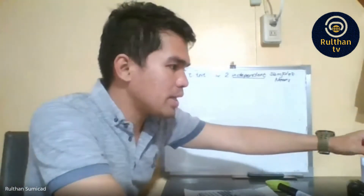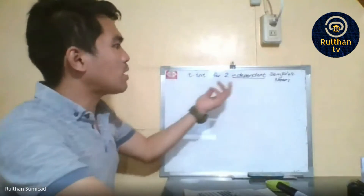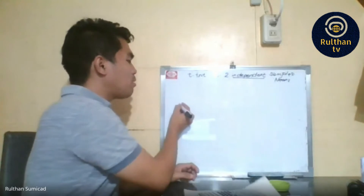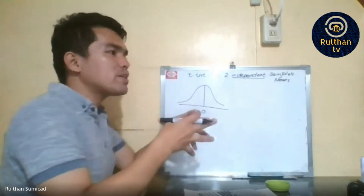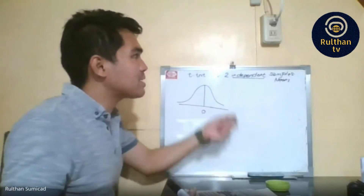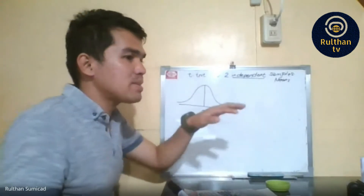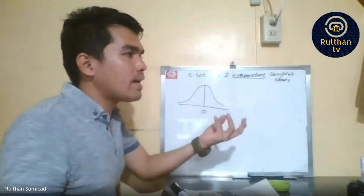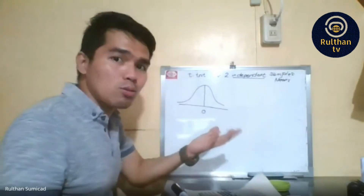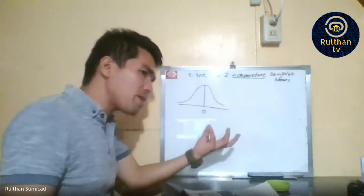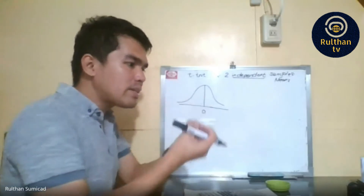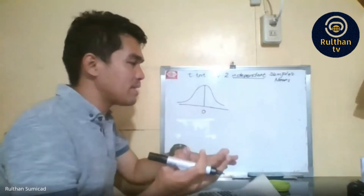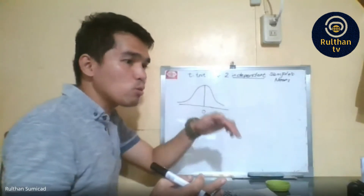When talking about two independent sample means, the mean here refers to the average difference of the sample means of the two groups. For example, you get the difference of all the two sample means you can get — Population A and Population B — then get the average of those differences. That's the mean difference of the two sample groups.